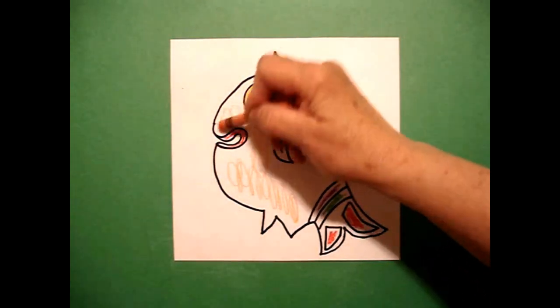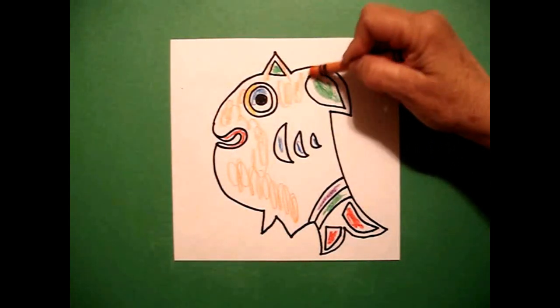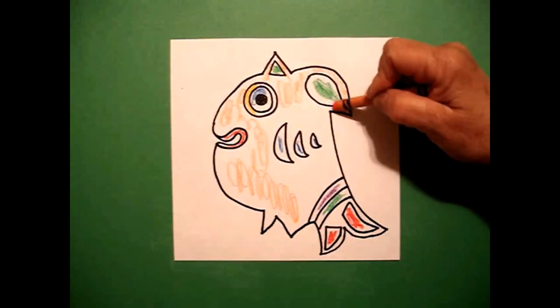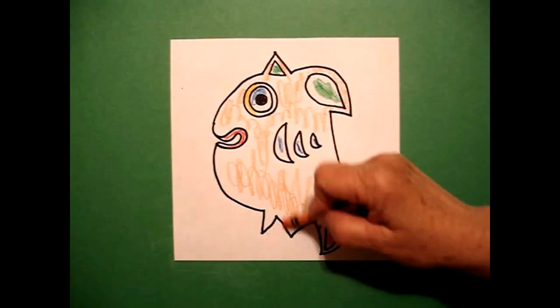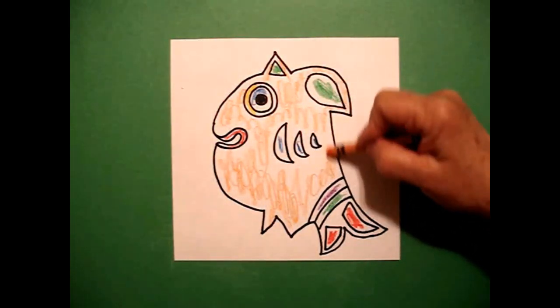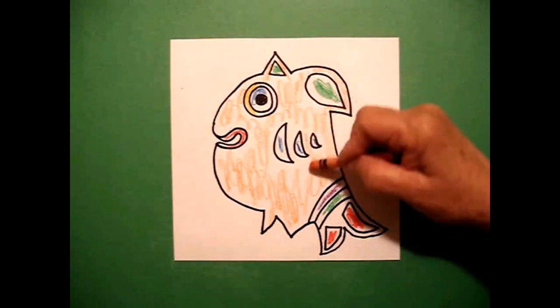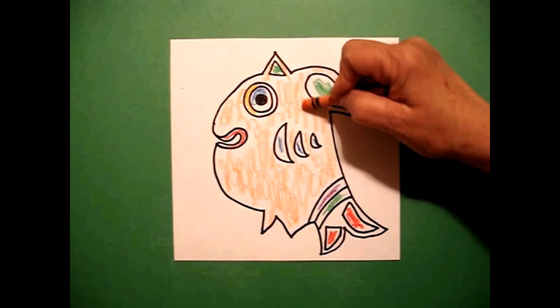Now when you do African art, what they usually do, this would really be made out of cloth and it would be what we call an applique. So every section that we're coloring with crayon, they would cut out with actual colored cloth and sew. This is much easier.